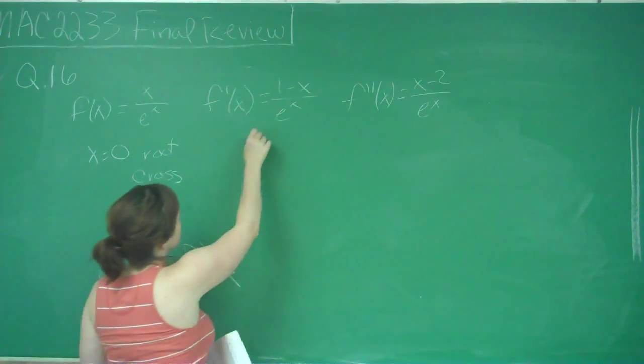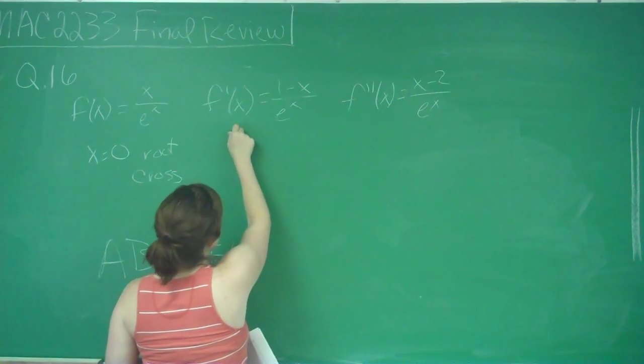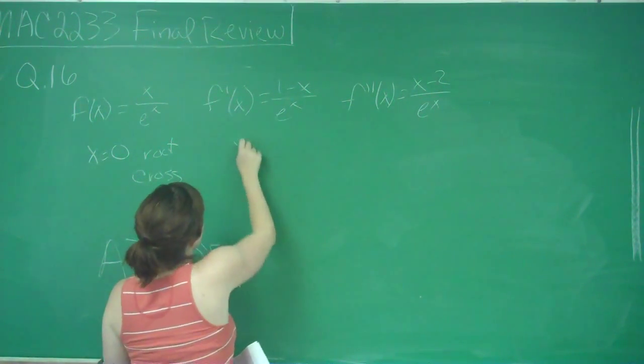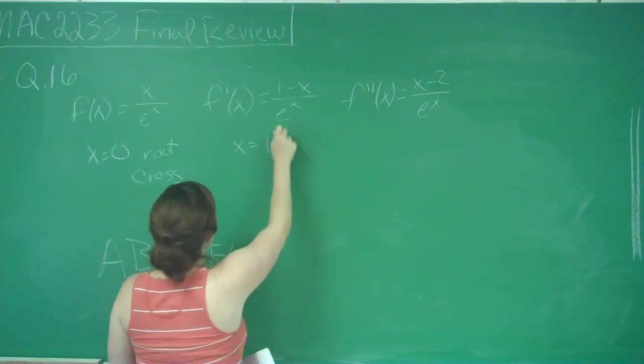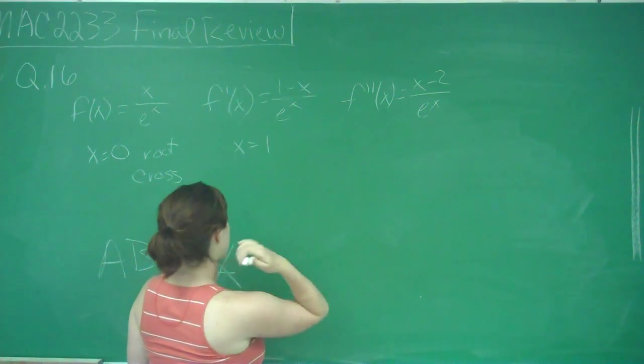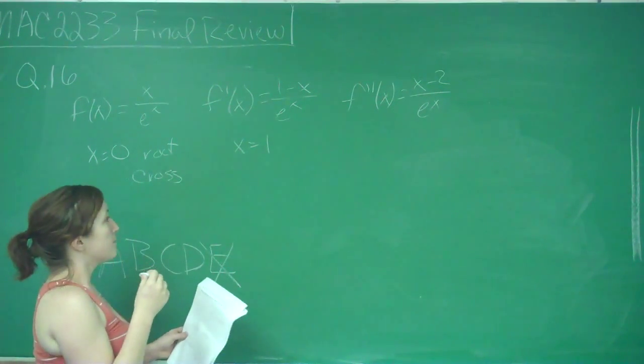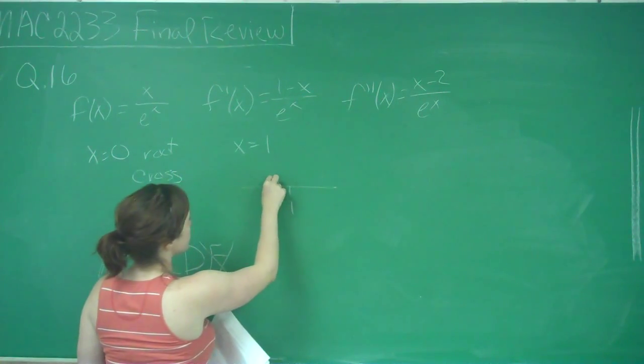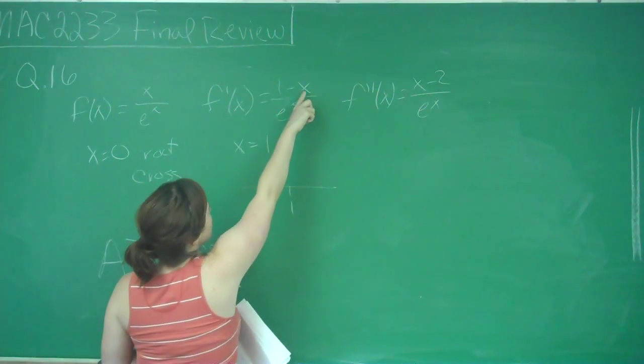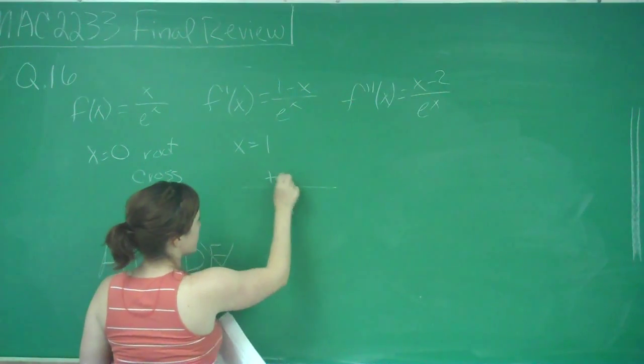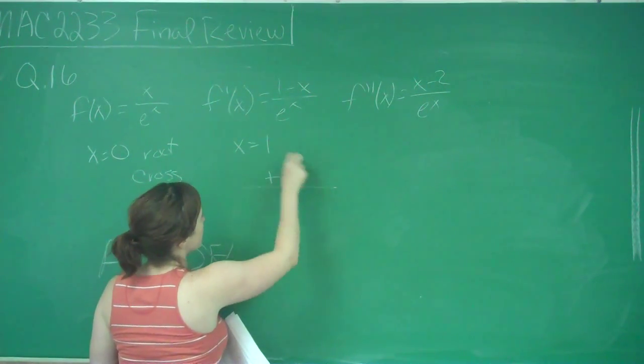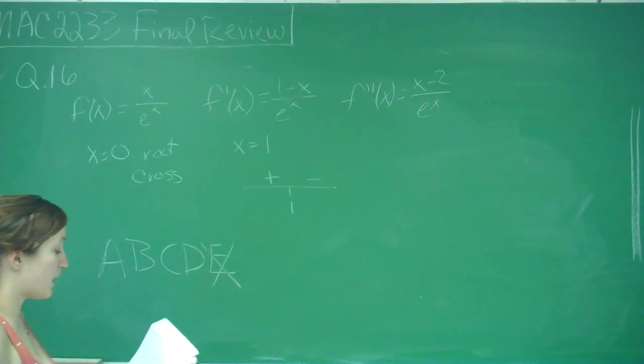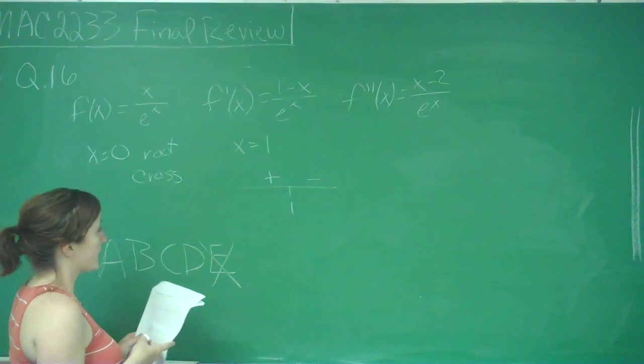Moving on to our first derivative, we set the numerator equal to 0 to get our critical numbers. We get x = 1, and e^x will never be 0, so we don't have to worry about that. We should have either a max or minimum at 1. If we plug in 0, we get 1/1, which is positive. If we plug in 2, we get negative over positive, which is negative.